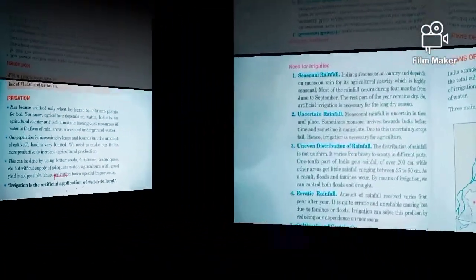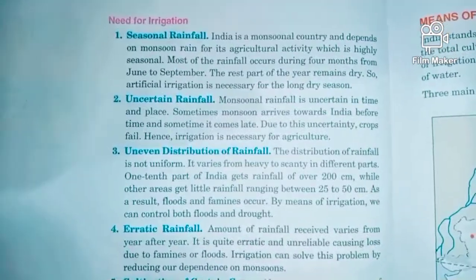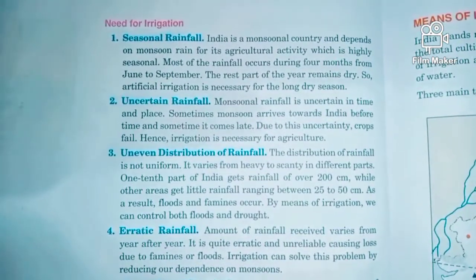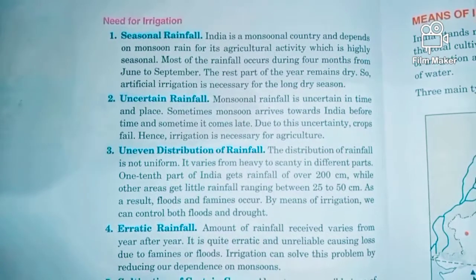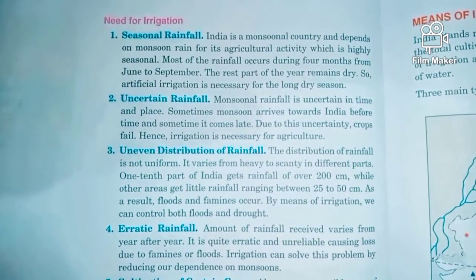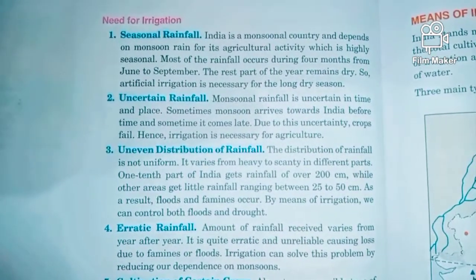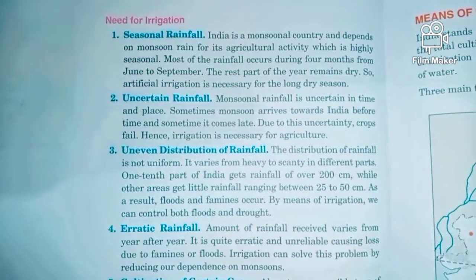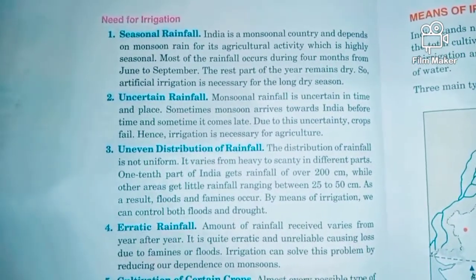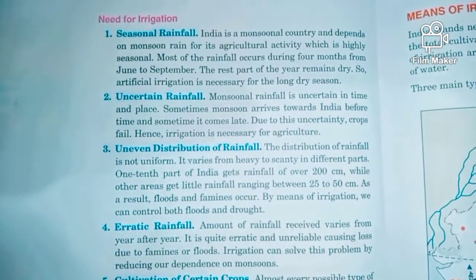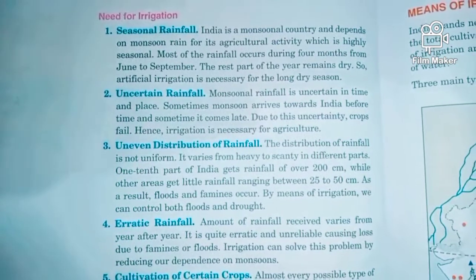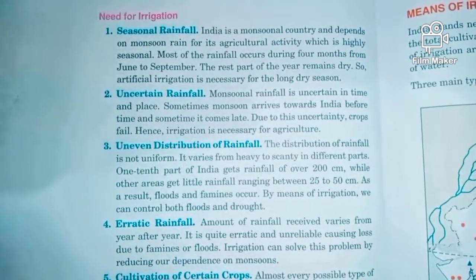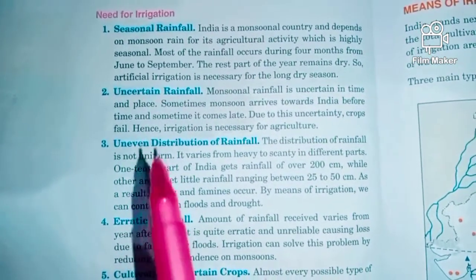Though India has vast resources of water, why do we still require irrigation — that is, an artificial water supply? There are several reasons. From an examination point of view, we can note why India needs irrigation. The first reason is seasonal rainfall: in India the monsoon season goes from June to September.